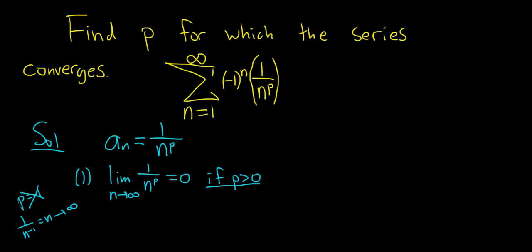If p is positive, the n will stay downstairs, and the limit will be zero. Two, we have to check that it's non-increasing. So a sub n, which is 1 over n to the p, is non-increasing, and I'll just say it then I'll justify it, for p greater than zero. And I'm going to go ahead now and show you why.